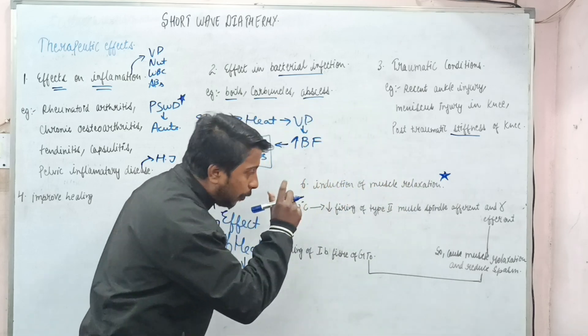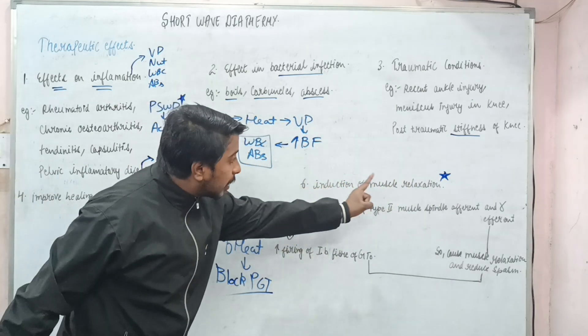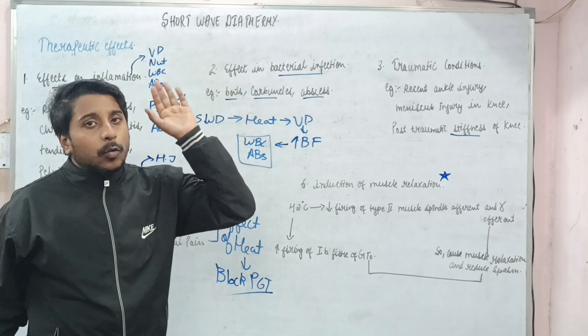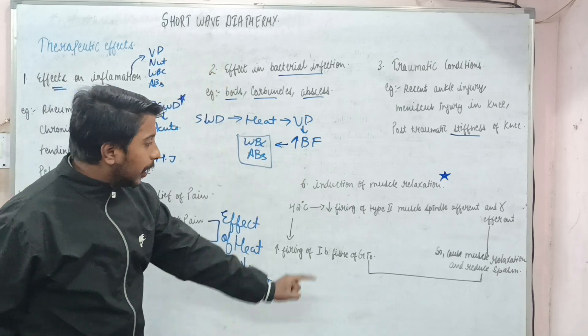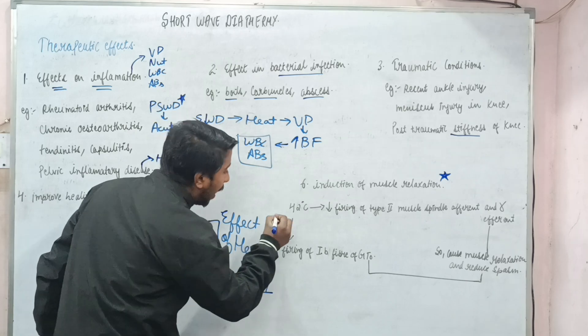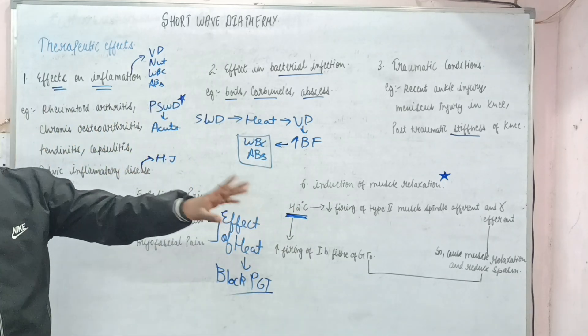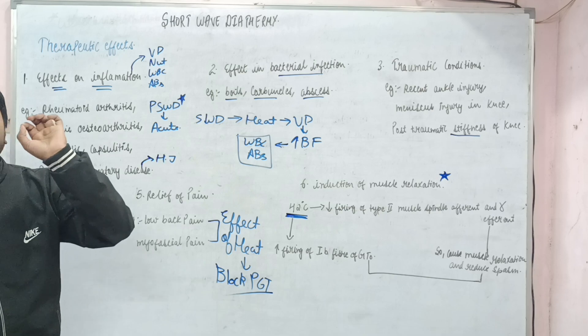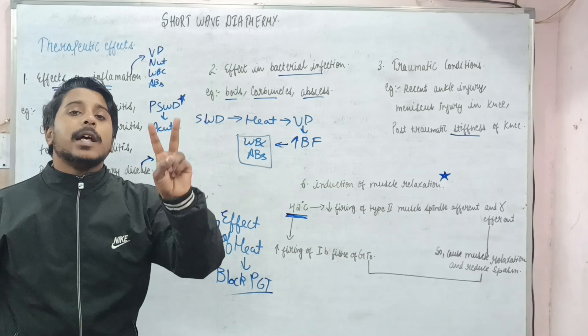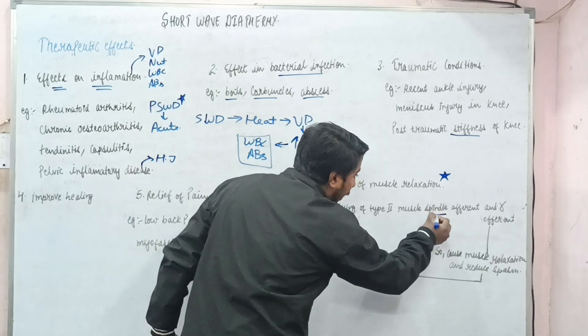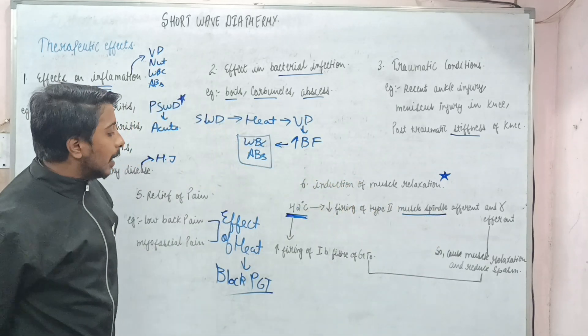Most important point is induction of muscle relaxation. Whenever we want to relax a muscle, we will give shortwave diathermy. When the temperature rises up to 42 degrees Celsius, there will be two things: first, muscle spindle; second, GTO.